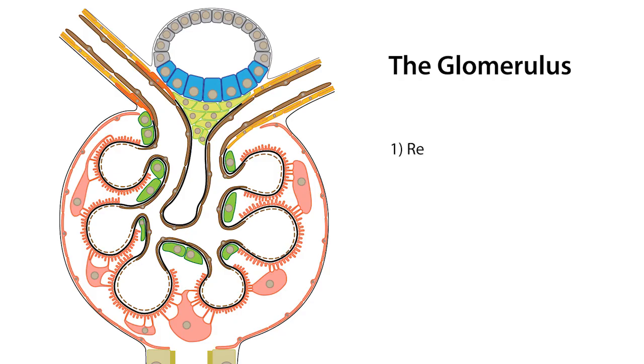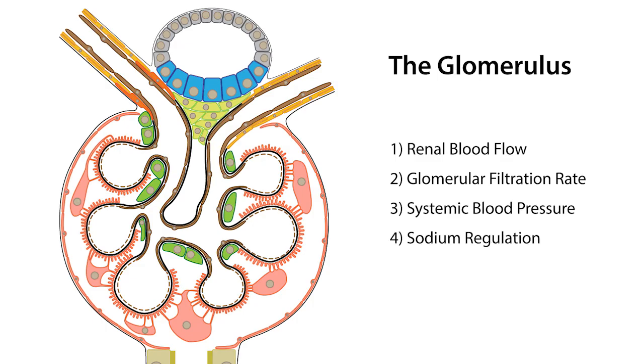The glomerulus regulates renal blood flow, glomerular filtration rate, as well as contributes towards the regulation of systemic blood pressure and sodium regulation by the kidneys.